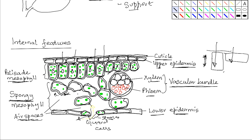These are the adaptive features of the leaf, and each feature plays a role in the process of photosynthesis. Most leaves have these adaptive features to enhance the process of photosynthesis.